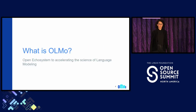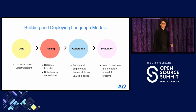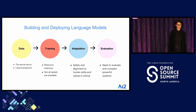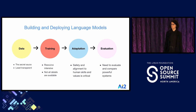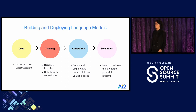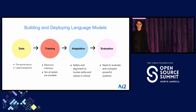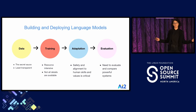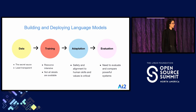So what is the OLMo project? We have organized our work in building these language models in four important steps. The first step is data. This is the hidden secret of a lot of language modeling research, and it is the least transparent. But at the same time, some would argue this is the most important one.